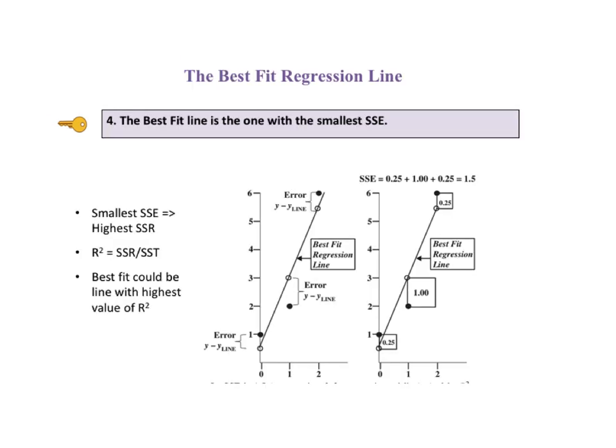There are several methods for calculating the regression line with the best fit, but the most common method is to calculate sums of squares, as we have done above, and then to determine the least sum of squares, the lowest SSE. This is also known as the ordinary least sum of squares. And since SSE equals SST minus SSR, the lowest SSE corresponds to the highest SSR. And SSR divided by SST is one measure of goodness of fit called R squared. So the best fit could be the one with the highest value of SSR or the highest value of R squared.